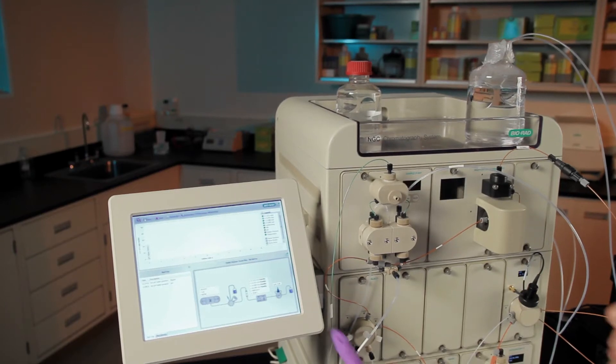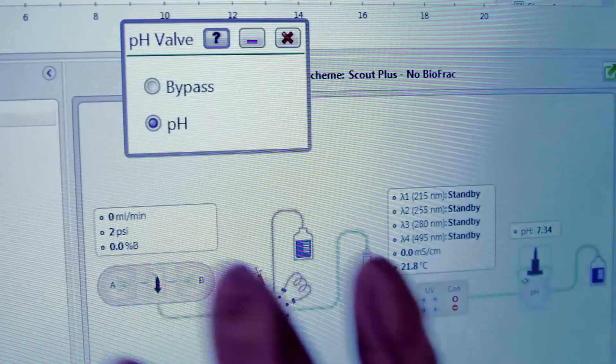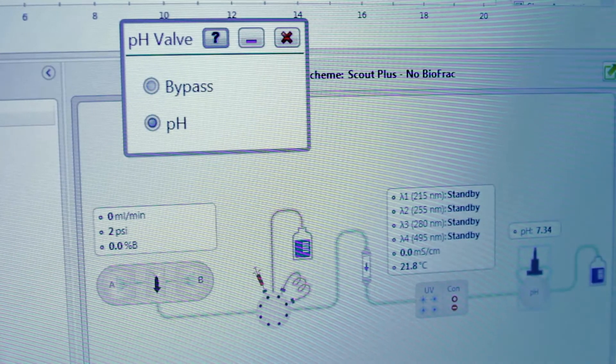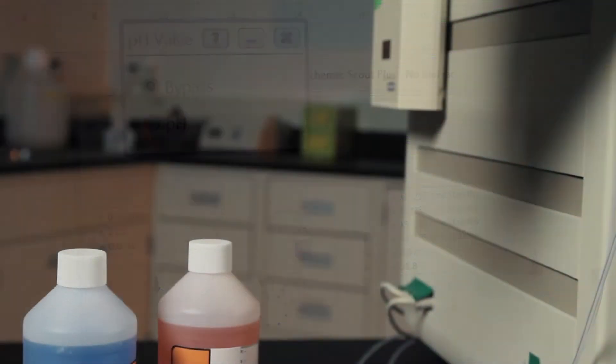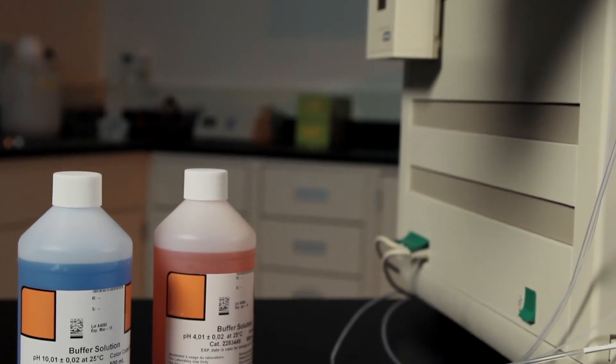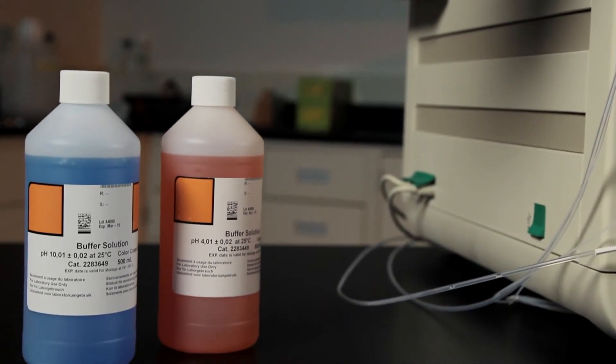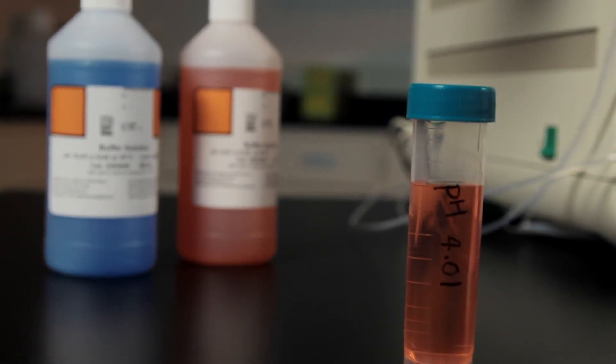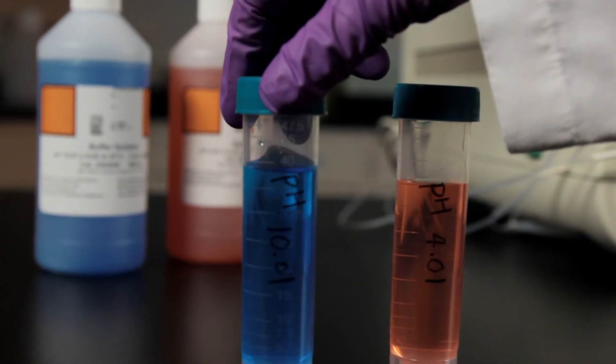If you are using the NGC's touch screen, you can touch the pH monitor icon in the fluidic scheme and select Bypass. To calibrate the pH valve, use two pH calibration buffers with a difference of at least one pH unit. Allow buffers to reach operating temperature before use.